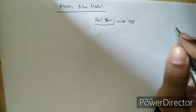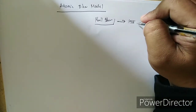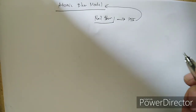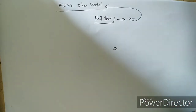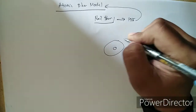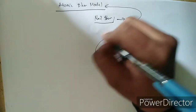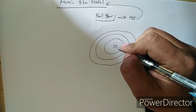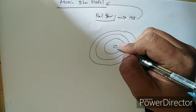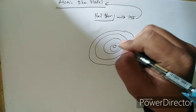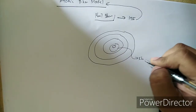He developed this model in 1915 and called it the Atomic Bohr Model. The Atomic Bohr Model is composed of a center — this middle part is the nucleus of an atom — and the nucleus is composed of the proton and the neutron.